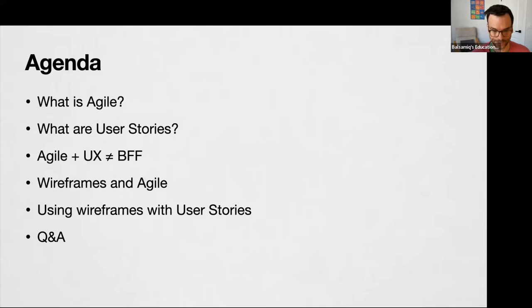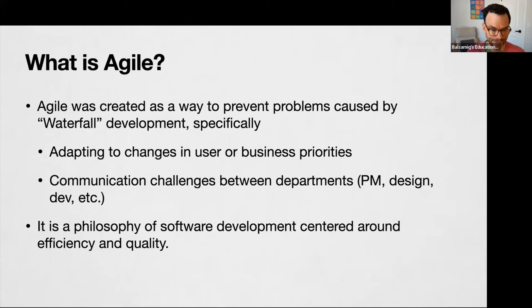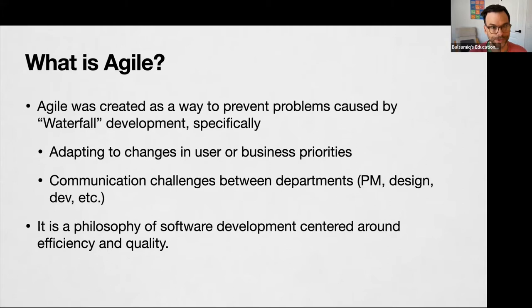So what is Agile? A lot of talks don't really go back to the beginning and talk about what Agile is and what it's all about. Agile was created as a way to prevent problems caused by traditional waterfall development — specifically the inability of waterfall to adapt to changes in user or business priorities, and the challenges of communicating between departments such as between business and development and design.